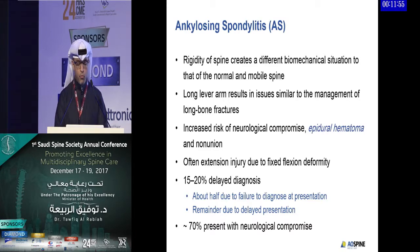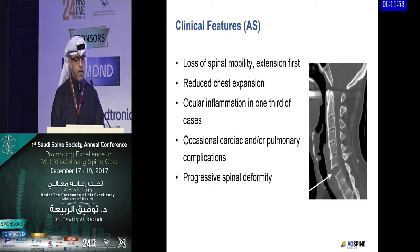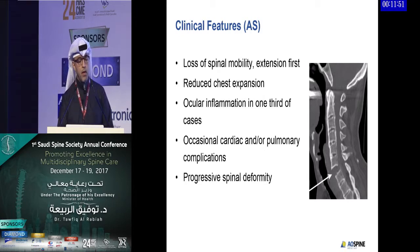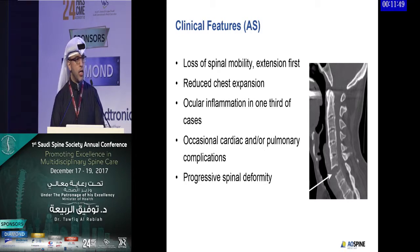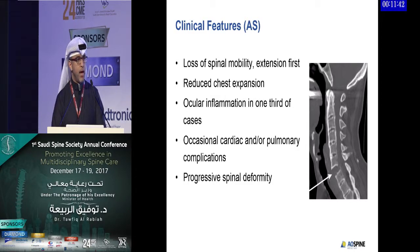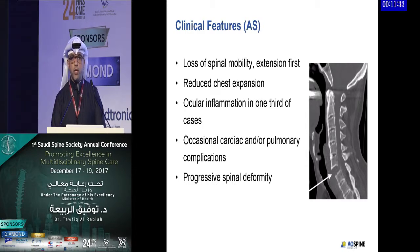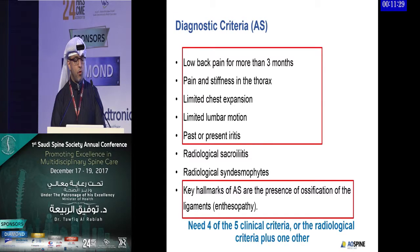Seventy percent present with neurological compromise. Clinical features include loss of spinal mobility with extension first, reduced chest expansion, and ocular inflammation in one-third of cases. Patients also present with cardiac and pulmonary complications, which must be taken into consideration when treating these patients surgically, along with progressive spinal deformity.